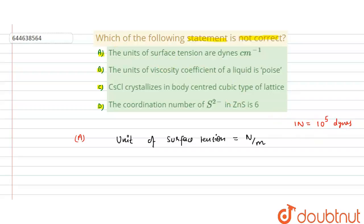Using this result, we can say that in place of Newton we can write dynes. So we can write dynes per centimeter. So this is the correct statement.